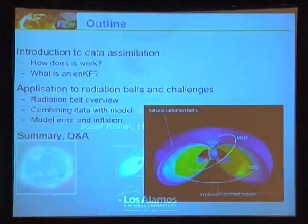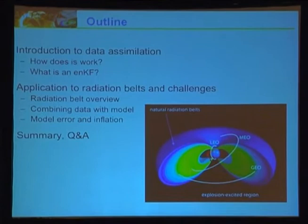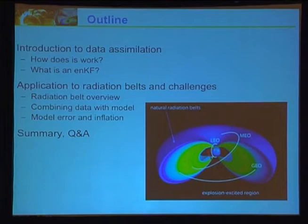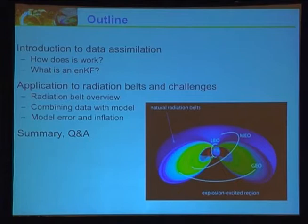Here's an outline. The data assimilation has been explained in the previous two talks, but I'm going to take a stab at it. We're going to talk about the application to radiation belts and its challenges: the radiation belt overview, how we combine data with the model, and a very important aspect — we have to consider model errors or model deficiencies that can significantly hinder data assimilation results. One method we're trying is called inflation.